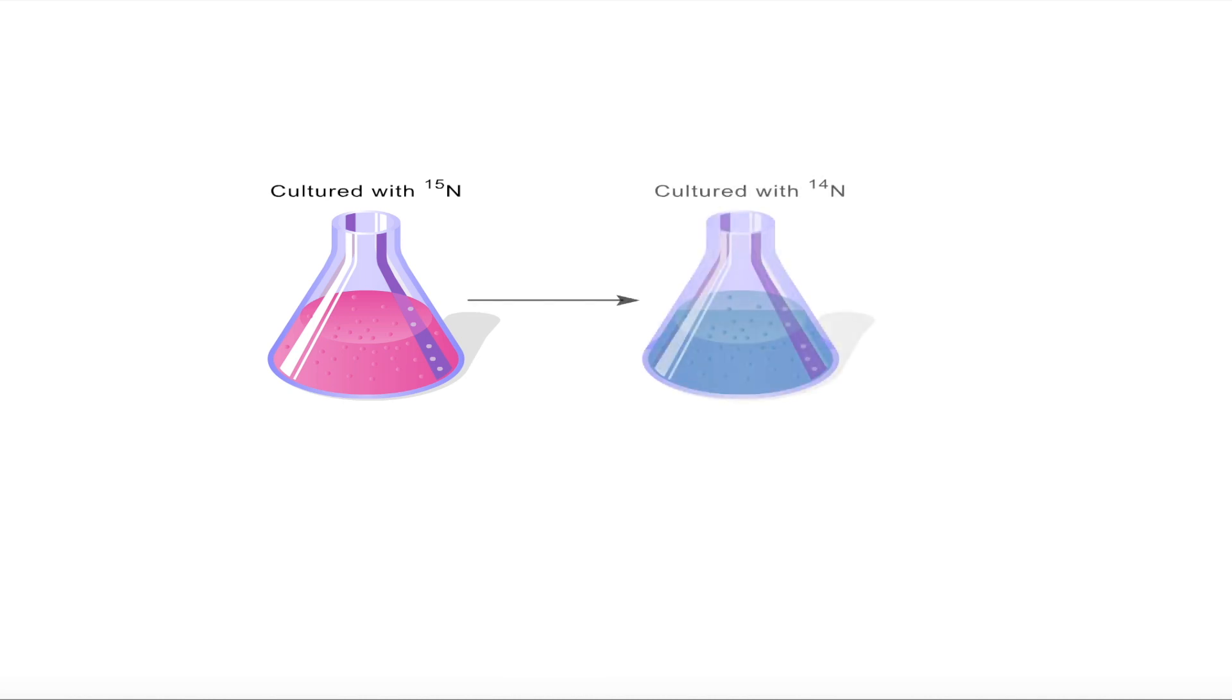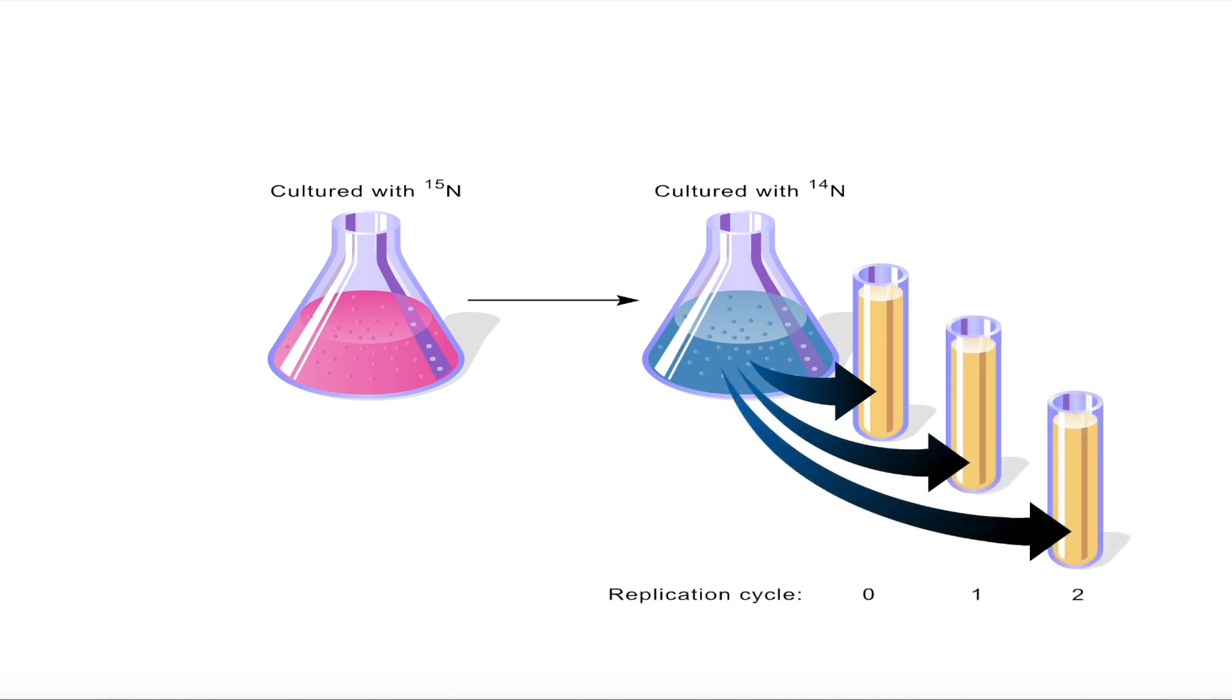To label the DNA, the scientists first cultured bacteria in a growth medium containing a 15N-labeled ammonium salt. All the DNA made in the medium contained the heavy 15N. They then shifted the bacteria to growth medium containing the normal 14N isotope, so all new DNA made after the shift was of normal density. Samples of the culture were taken at different times corresponding to replication cycles 0, just at the time of the shift, 1, and 2. DNA was extracted from each sample and its density was determined.